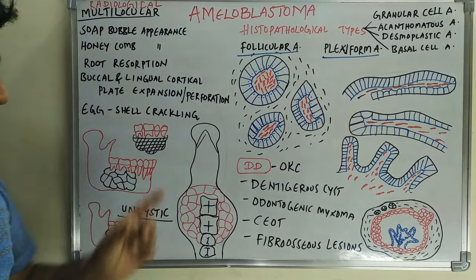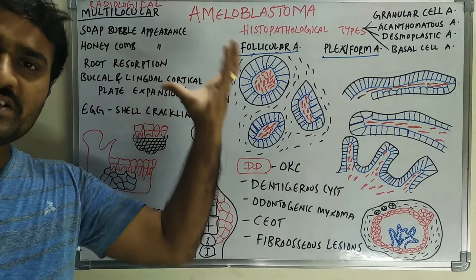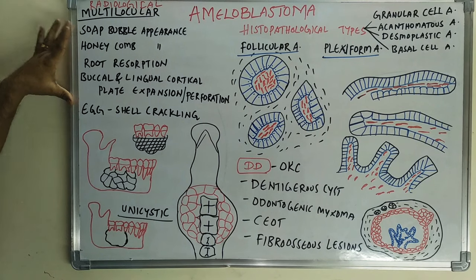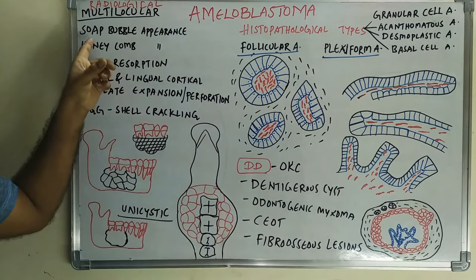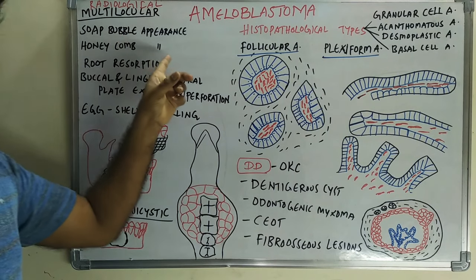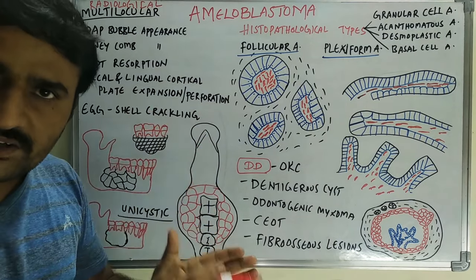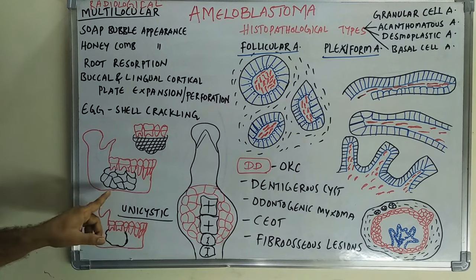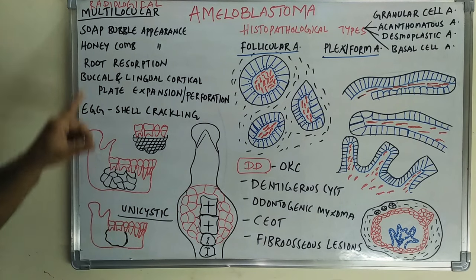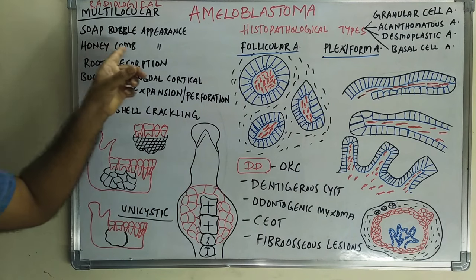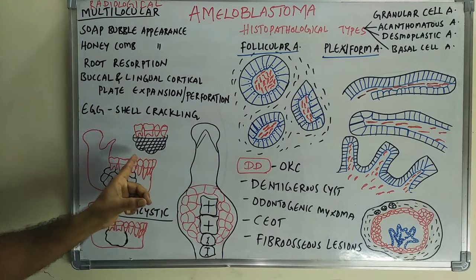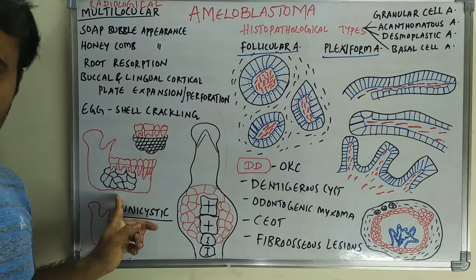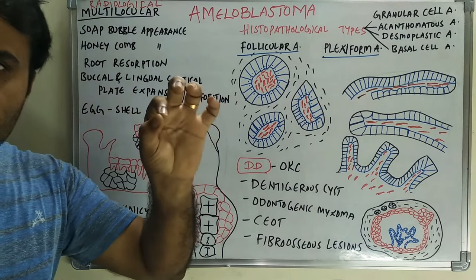Radiologically, amyloblastoma can be multilocular or unicystic. The multilocular appearance may produce a soap bubble appearance — when the locules are larger — or a honeycomb appearance when the locules are smaller. These two appearances are because of the multicystic nature.